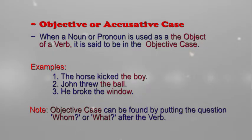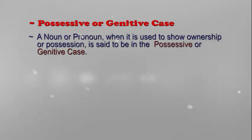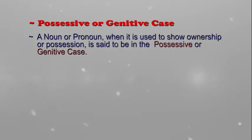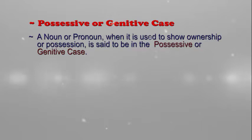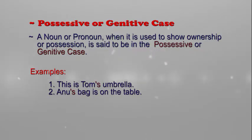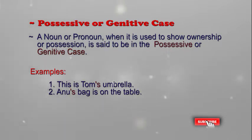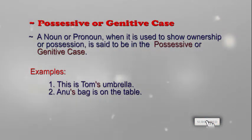Third: possessive or genitive case. A noun or pronoun when it is used to show ownership or possession is said to be in the possessive or genitive case. Examples: this is Tom's umbrella. Anu's bag is on the table.